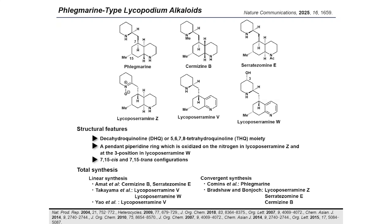Diversity within this class is further observed in the stereochemical arrangement of the tetrahydroquinoline or decahydroquinoline moiety, specifically the C7/C5 cis and C7/C5 trans configurations. Numerous synthetic approaches featuring linear and convergent routes have been reported to achieve the total synthesis of phlegmarine alkaloids.